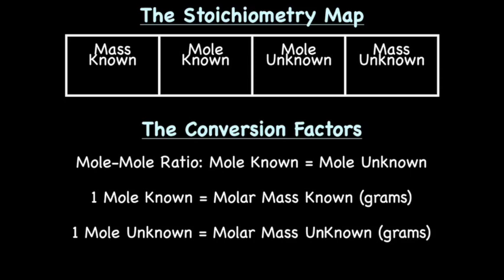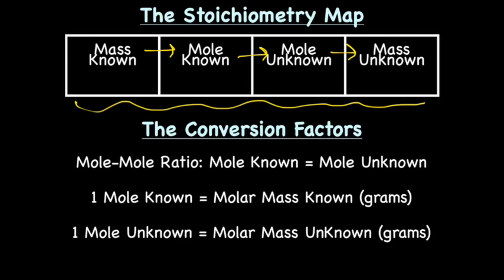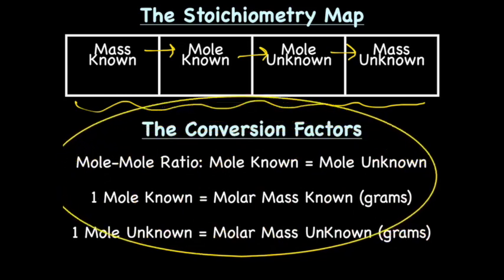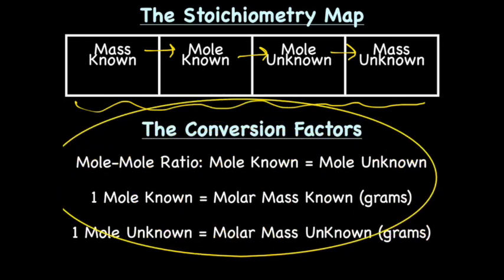Before we get into how to do mole-mole conversions, here are a few things necessary for this unit. First is the stoichiometry map: mass known → mole known → mole unknown → mass unknown. This map is extremely useful, so copy it down in your notes. The conversion factors we'll use include the mole-mole ratio (mole known equals mole unknown), one mole known equals the molar mass of known in grams, and one mole unknown equals the molar mass of unknown in grams.